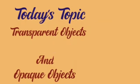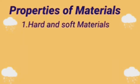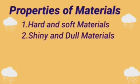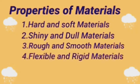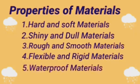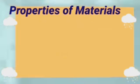In last class we learnt properties of materials: first, hard and soft materials; second, shiny and dull materials; third, rough and smooth materials; fourth, flexible and rigid materials; and last, waterproof materials.